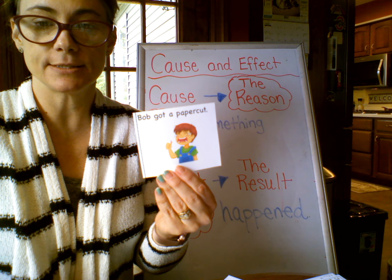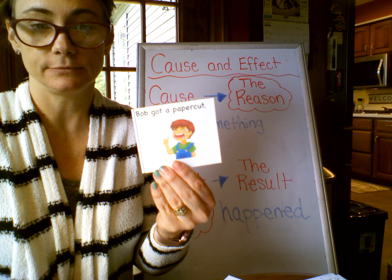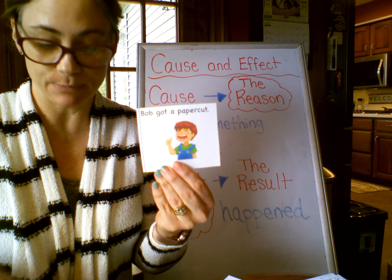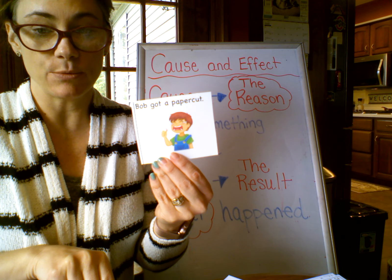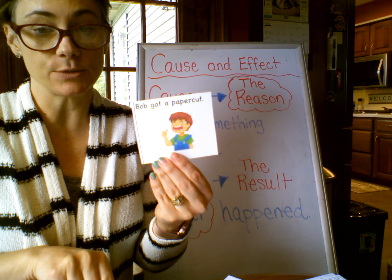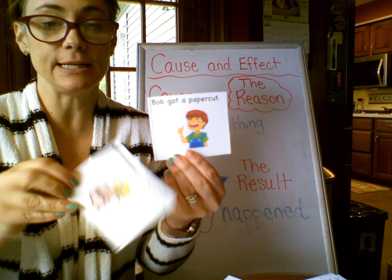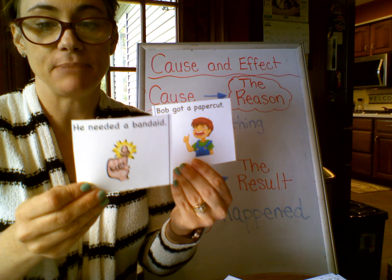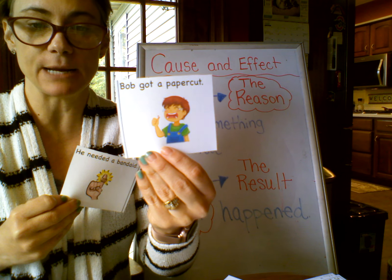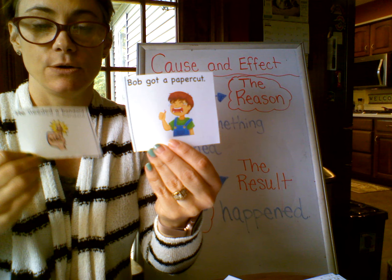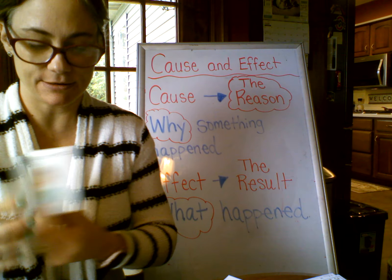So the cause: Bob got a paper cut. He must have been using some paper or maybe writing a story. So what was the result? What happened? Bob got a paper cut, so he needed a band-aid. The cause is Bob got a paper cut; what happened is he needed a band-aid.